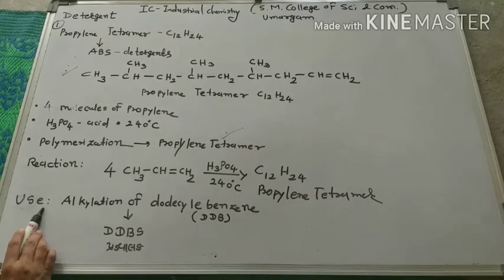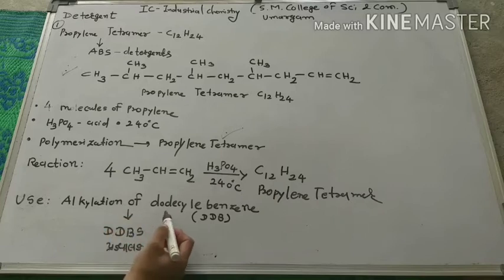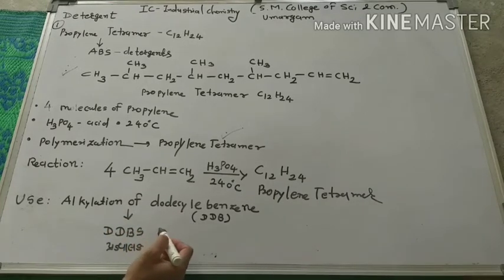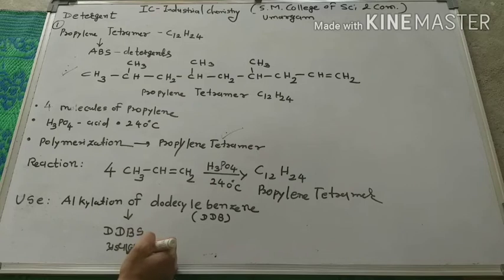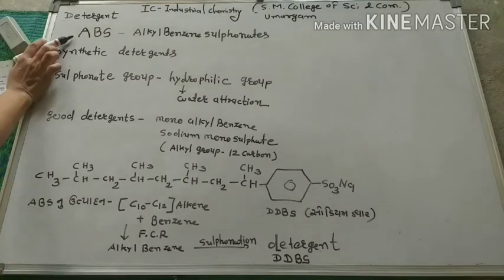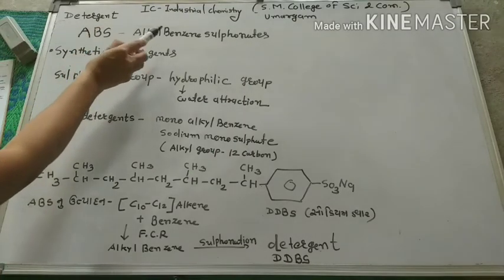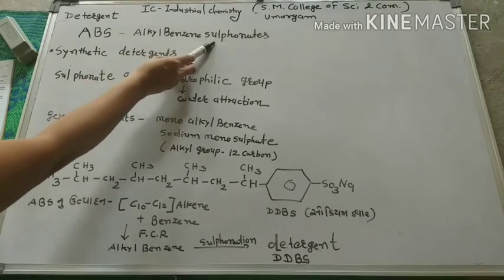The use of propylene tetramer is the alkylation of dodecyl benzene to give DDBS. DDBS is a detergent. Now we are talking about ABS — S-alkyl benzene sulfonate — which is also a detergent.